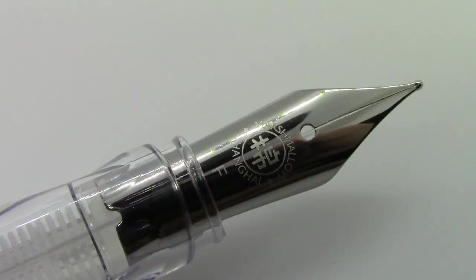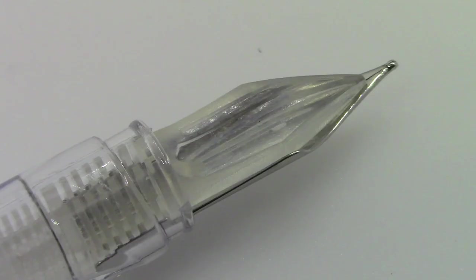On the nib it says for some reason 'marshmallow Shanghai' and then an F4 fine. I do not know why it says that. The feed is a nice feed, it's a clear feed so you'll pick up the ink color there which is nice.